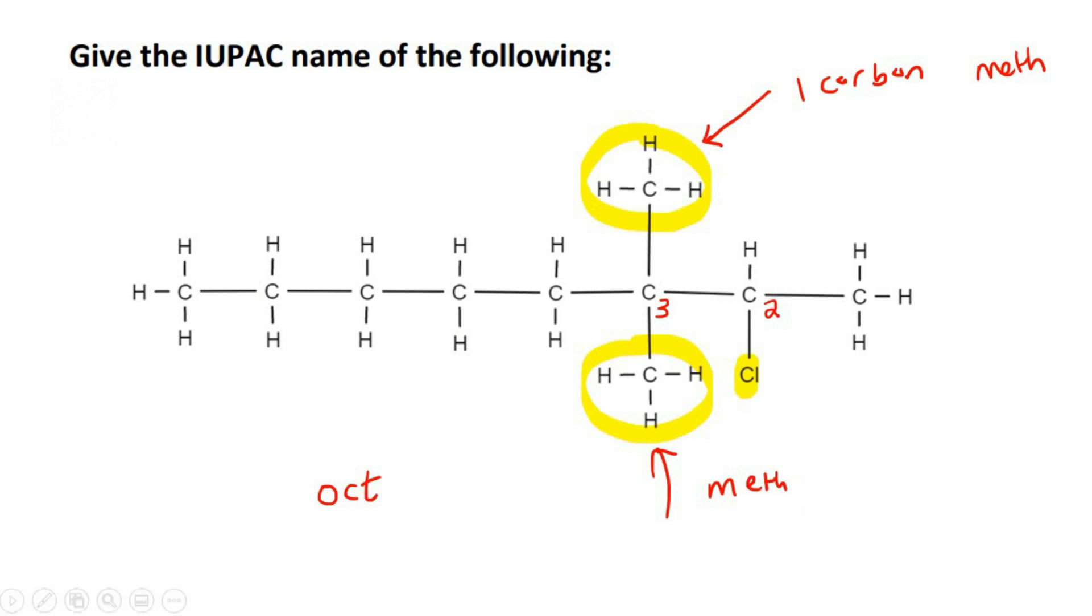If it was something like this, where there was that, then if you look at this branch over here, that is two carbons. Okay, so there's a difference. You need to make sure that you understand that.